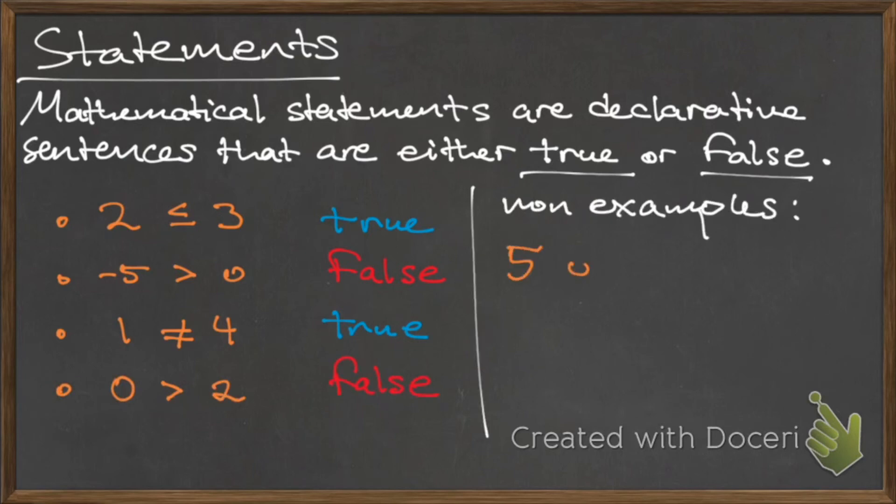However, some phrases such as five plus one or zero minus three are not declarative sentences and therefore they cannot be mathematical statements since they cannot be evaluated as true or false.